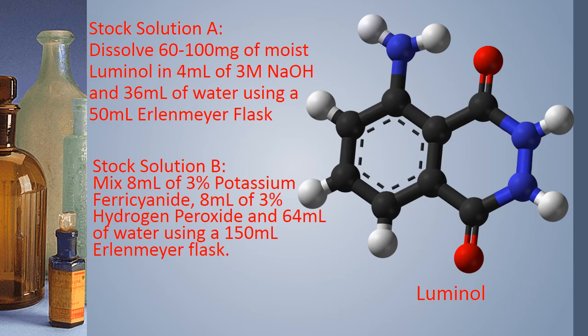For stock solution B, we mix 8 milliliters of 3% potassium ferricyanide, 8 milliliters of 3% hydrogen peroxide, and 64 milliliters of water using a 150 milliliter Erlenmeyer flask.